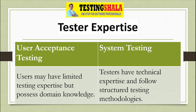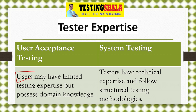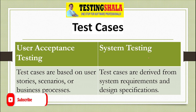Regarding expertise, UAT is done by end users who may not be well-versed in testing concepts — they possess domain knowledge and require some guidance from the testing team. System testing is done by testers who have technical expertise and follow rigorous testing procedures and methodology.